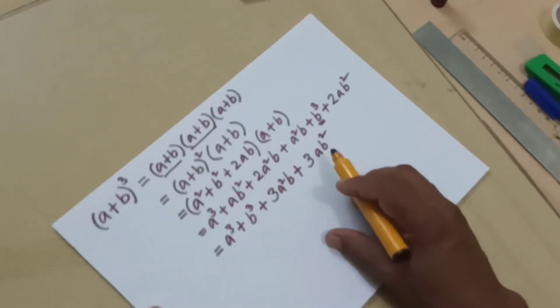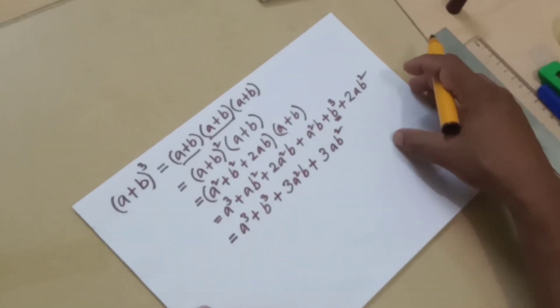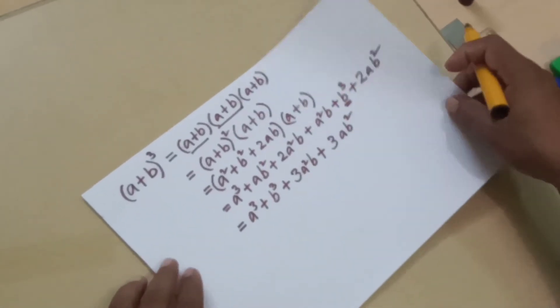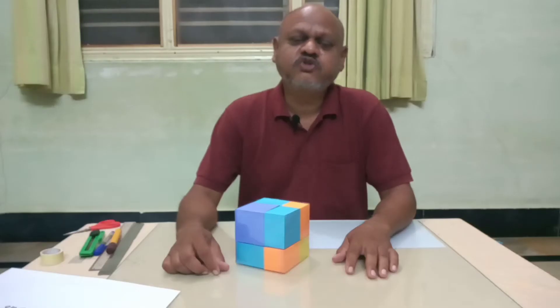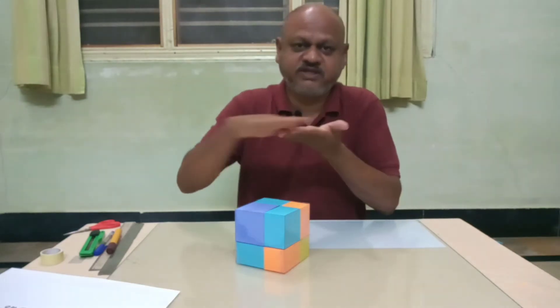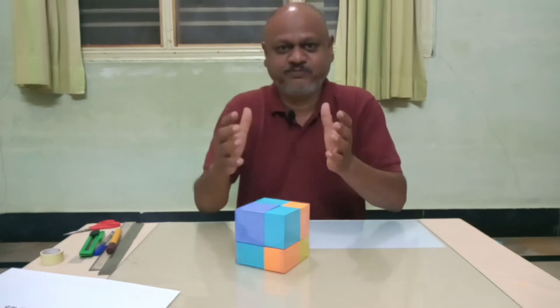Now let us see if we can understand this algebraic expression using our model. In geometry, when we talk about squared, we talk about the surface area. And when we talk about cubed, we talk about volume.